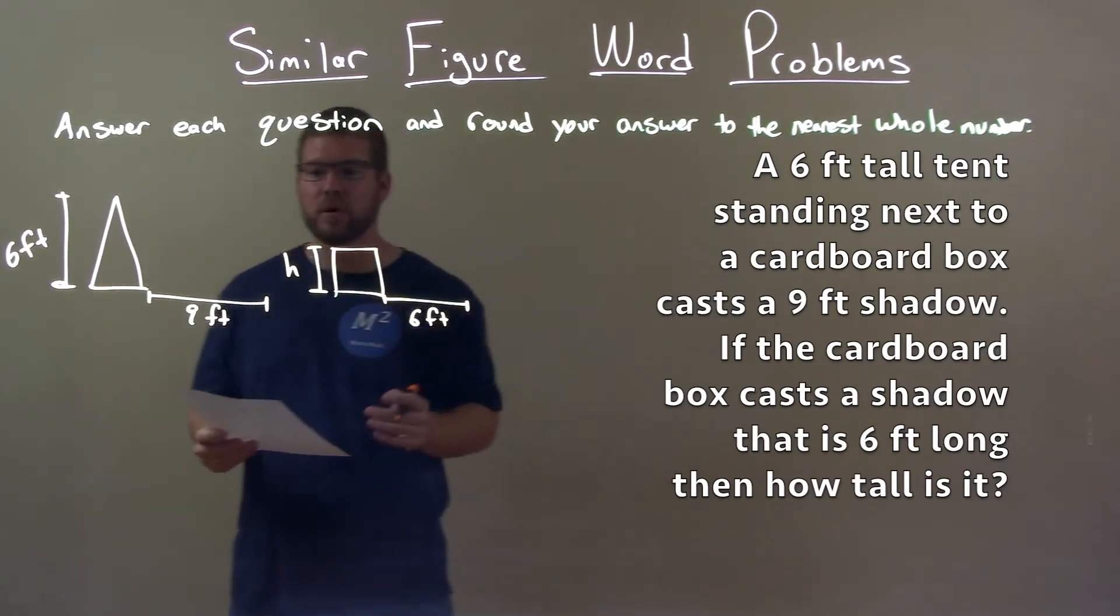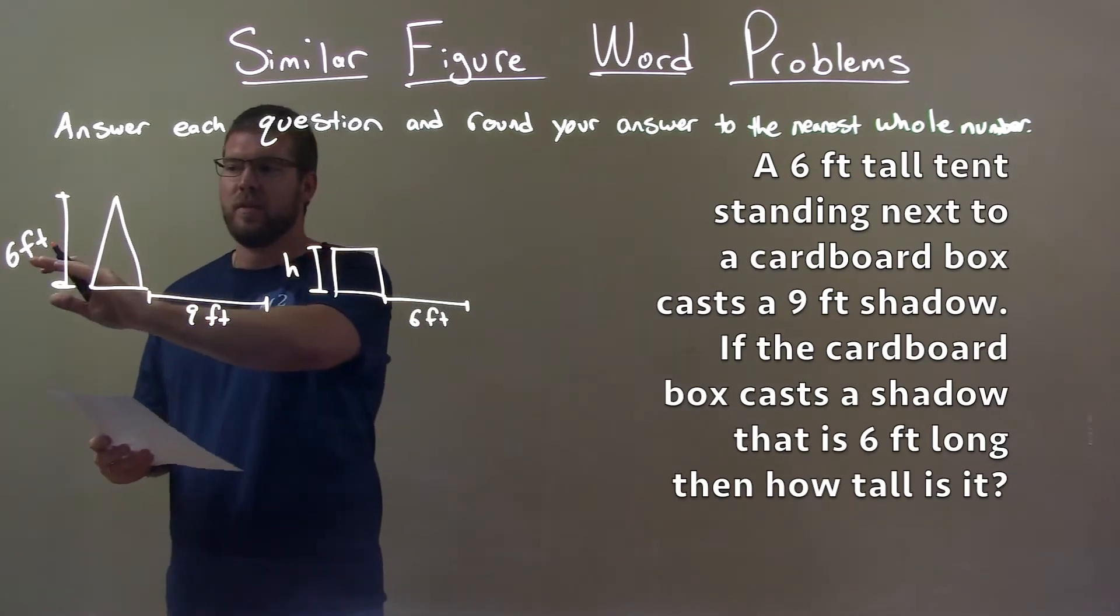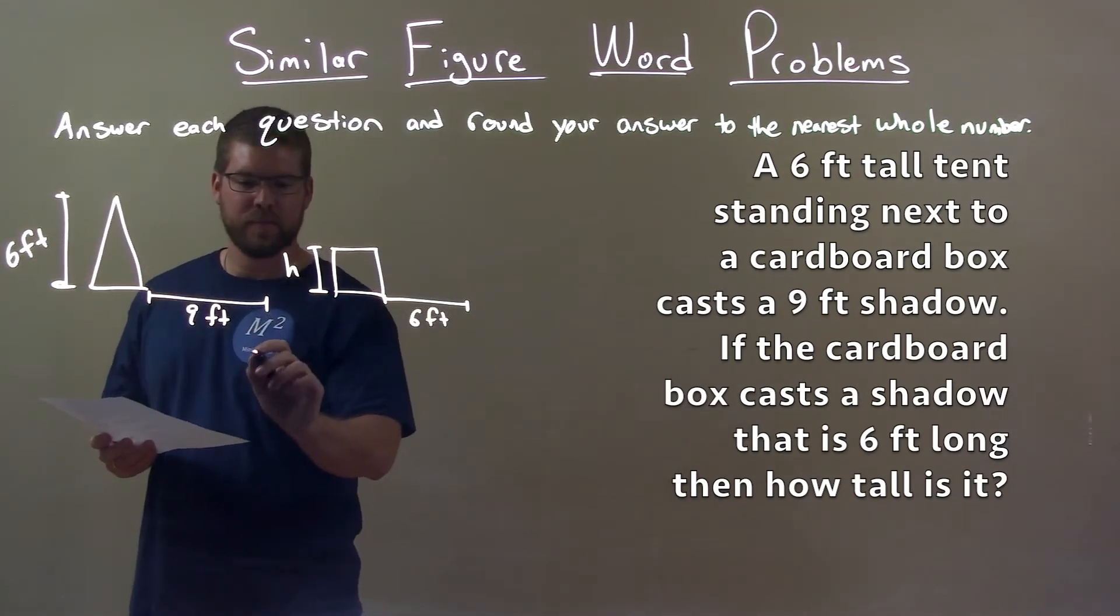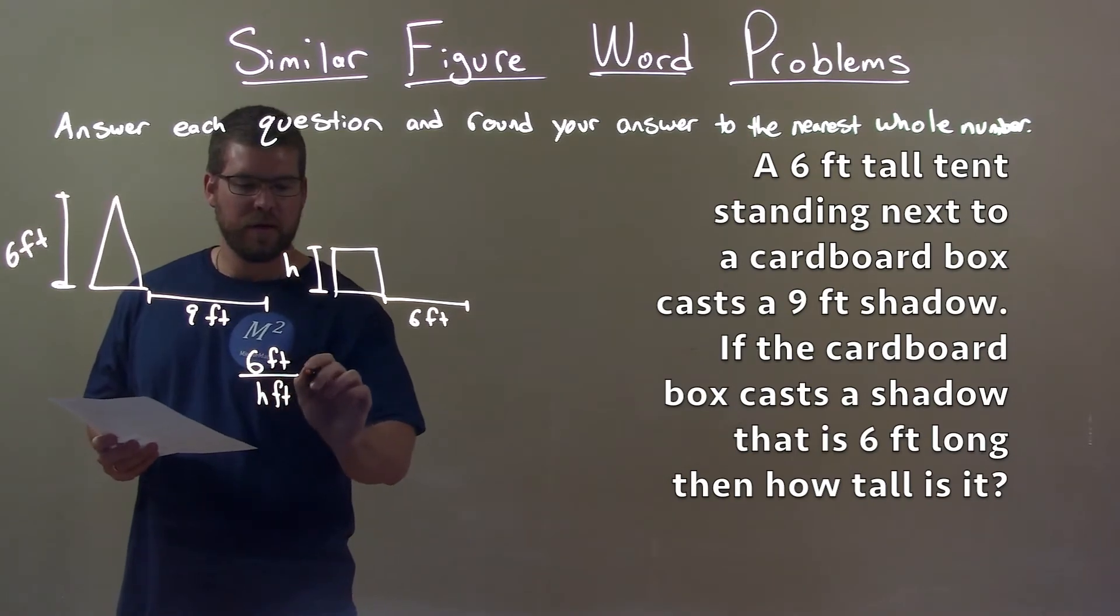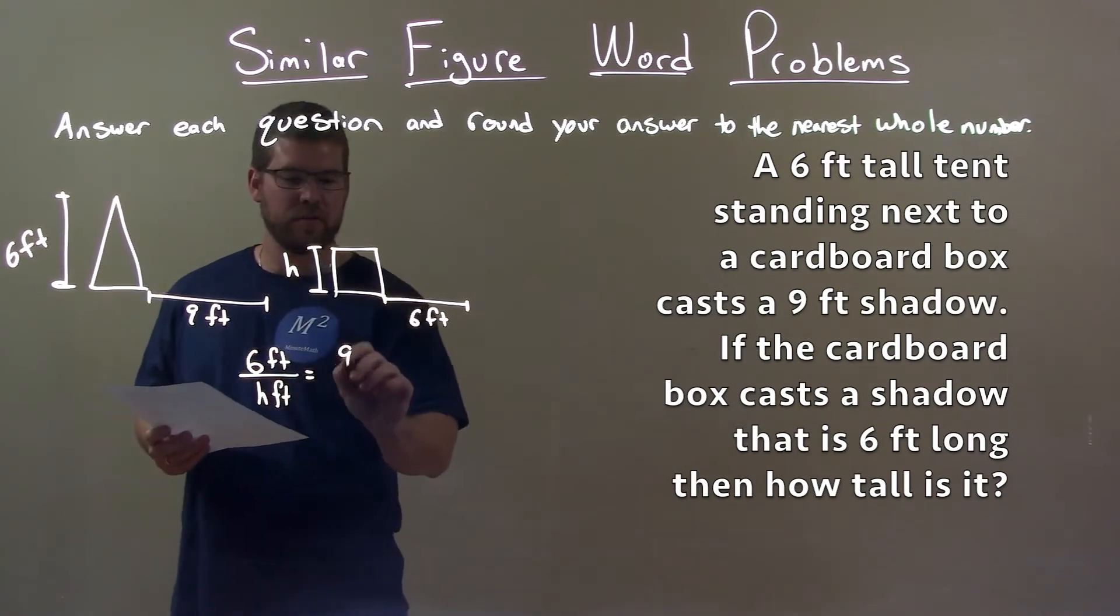So we need to set up a proportion. We have the height, six feet, over h feet, is equal to the length of the shadows as a proportion.